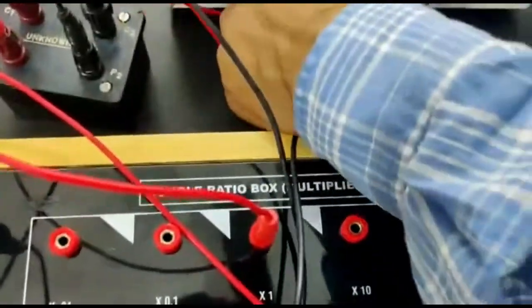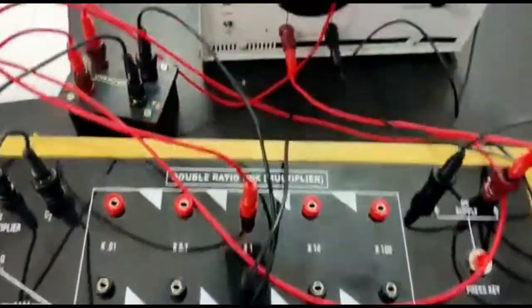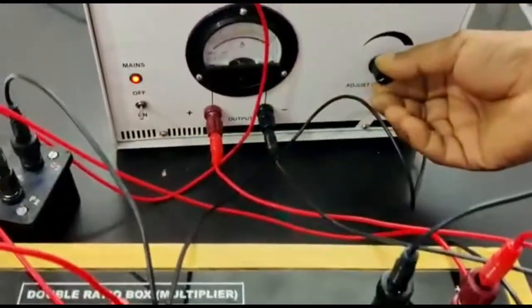Switch on the DC source. Press and hold the key to set approximately two ampere current.